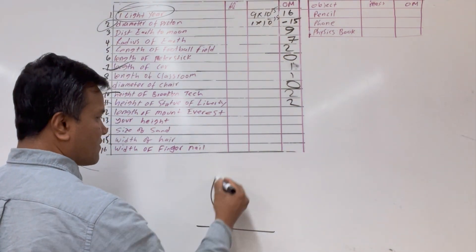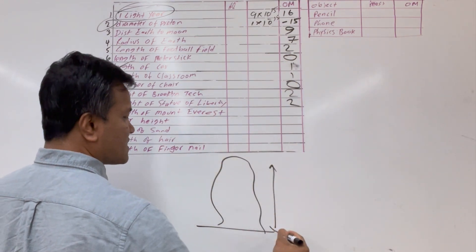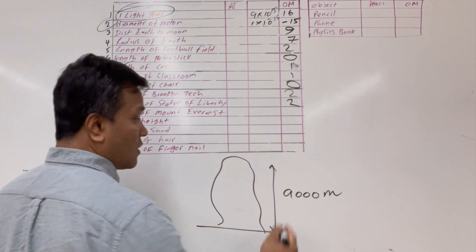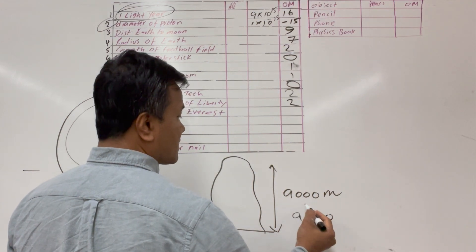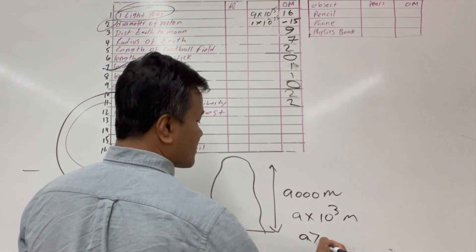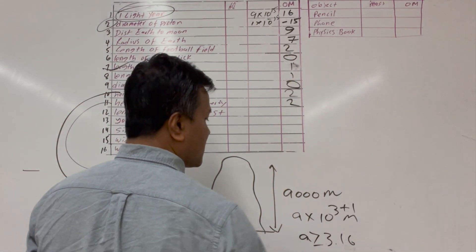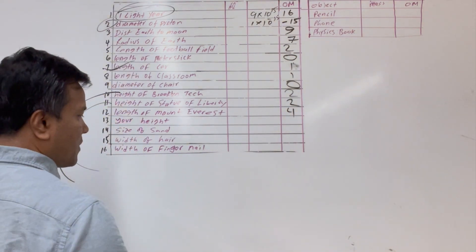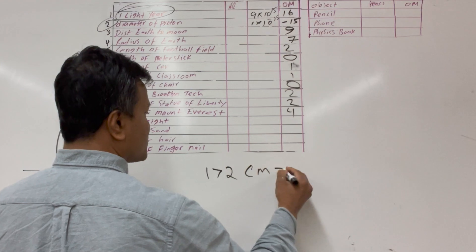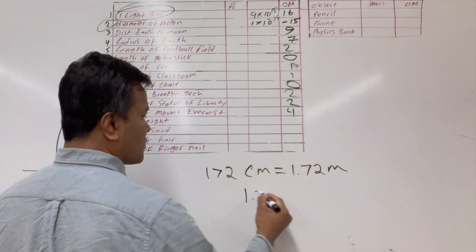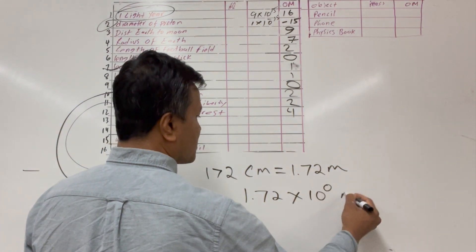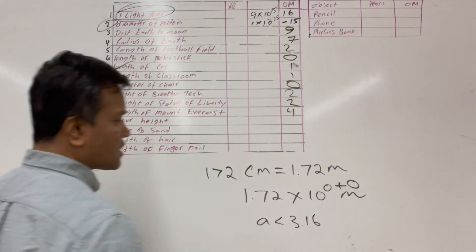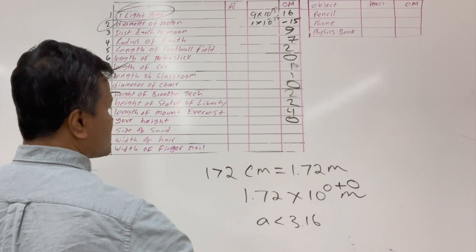Mount Everest in Nepal is about 9,000 meters. In scientific notation: 9×10³. Since A equals 9 is greater than 3.16, the order of magnitude is 3 plus 1 equals 4. The instructor's height is 172 centimeters, or 1.72 meters: 1.72×10⁰. Since 1.72 is less than 3.16, the order of magnitude is 0.